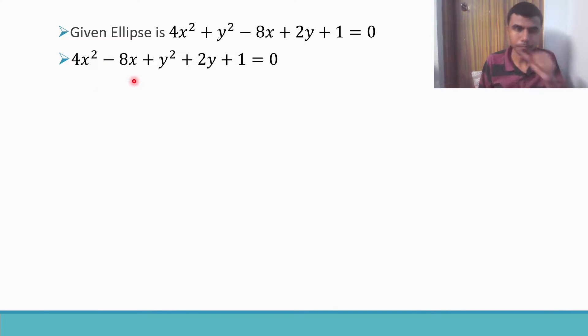Now, if you see in these two terms, here I have 4x² and minus 8x. I can take 4 common. If I'll do that, I'll get 4(x² - 2x) because I took 4 common, and these two I just wrote them in one bracket y² + 2y, and plus 1 is there.